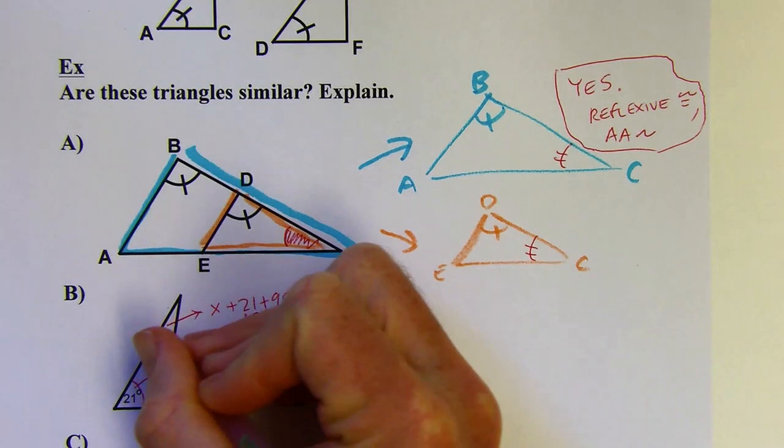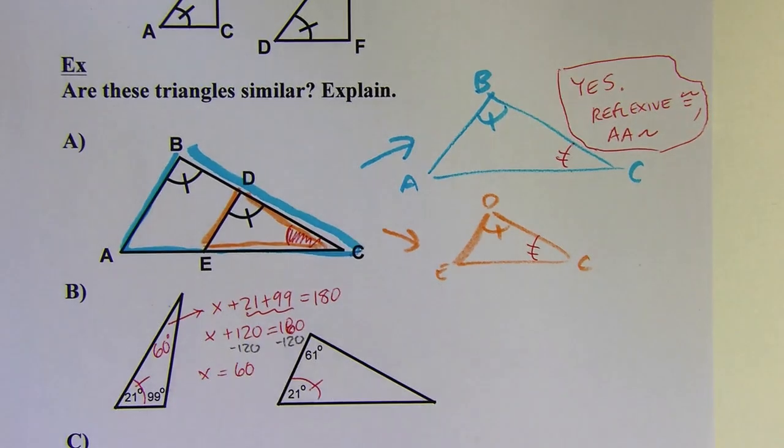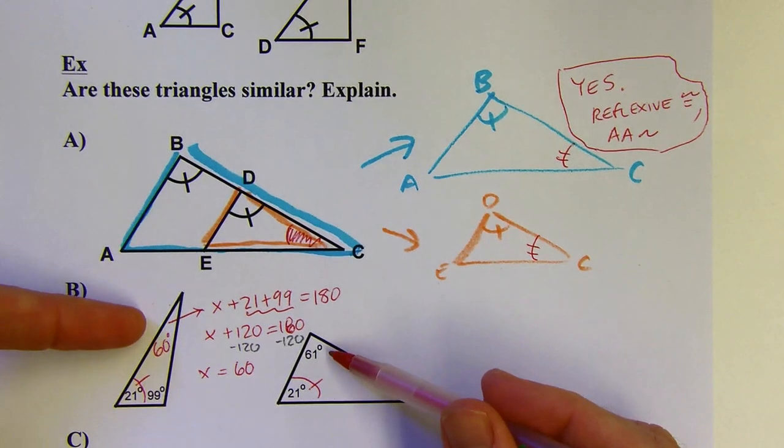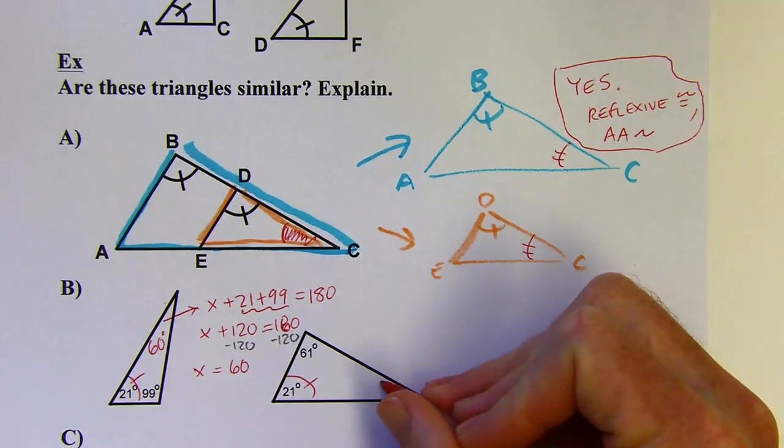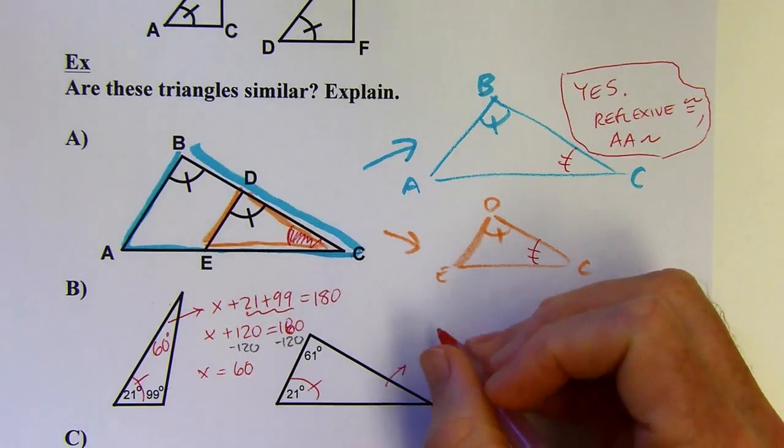This comes out to 60. So this angle here is 60 degrees. I can see now that those are not congruent. They're close but not quite. You could, just to be sure, find this last angle as well. Let's go ahead and do that.